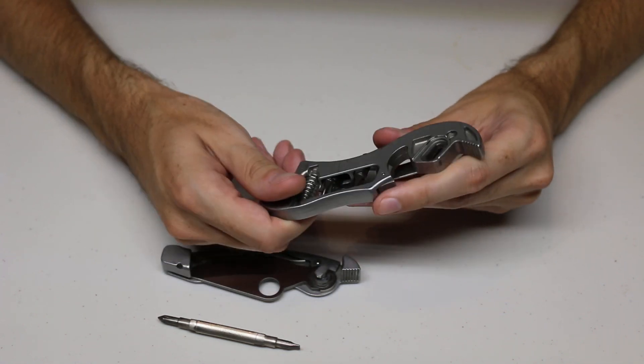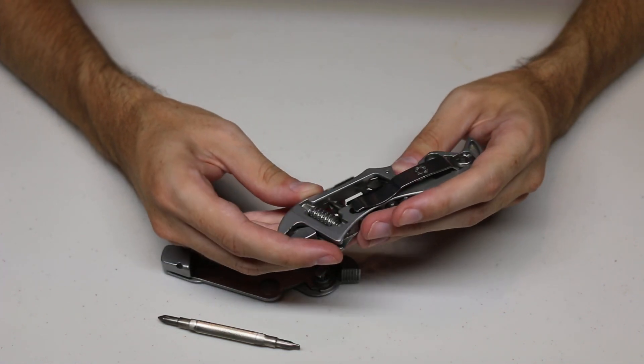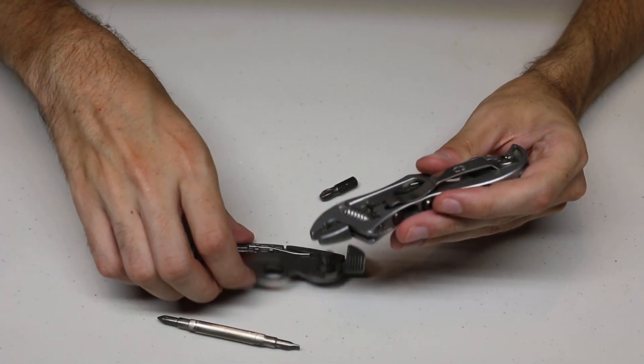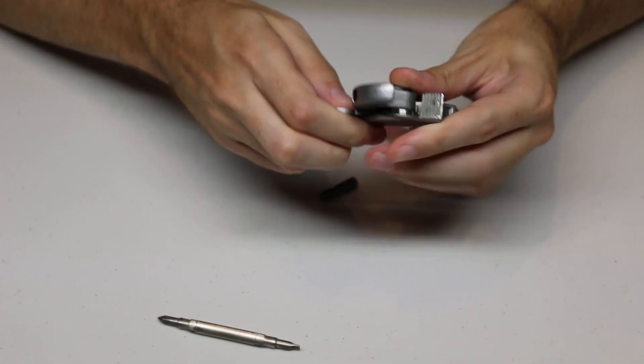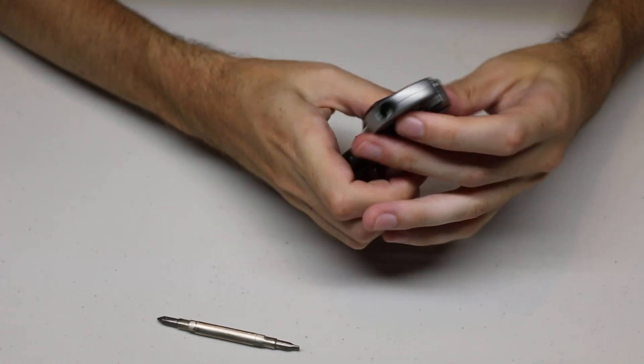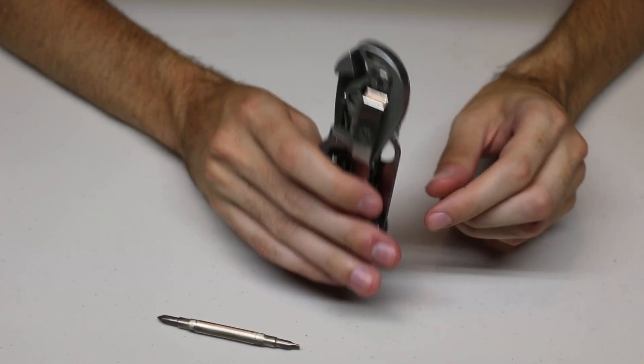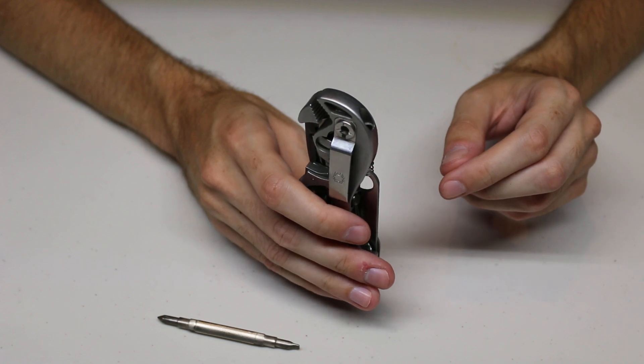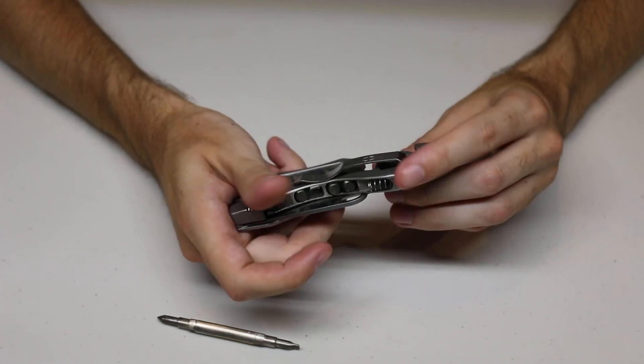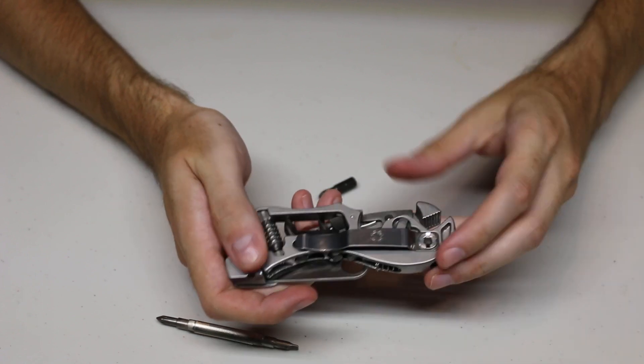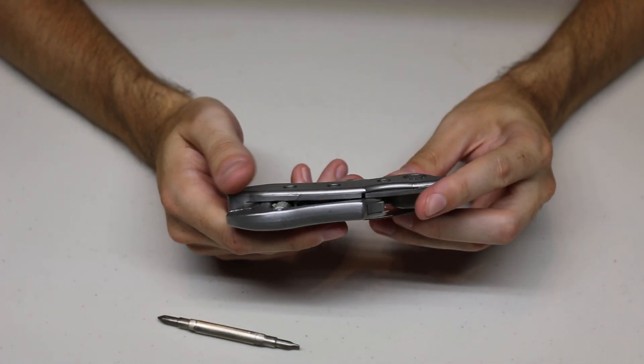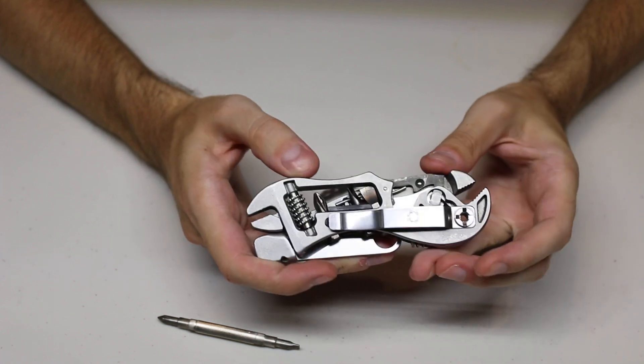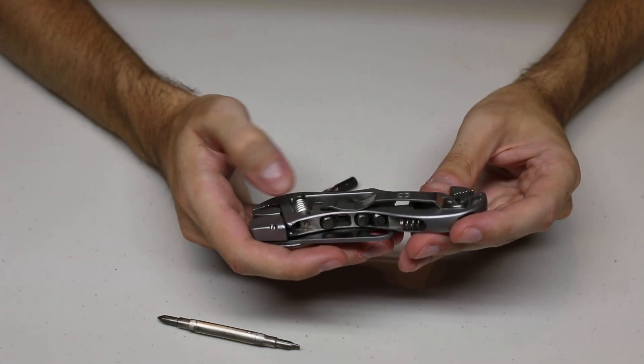Does come with a pocket clip right hand. Well, I guess that's right hand carry. Let's see if it's tip up or tip down. So it is I guess right hand tip down carry. Non-reversible pocket clip but that is super nice that it comes with a pocket clip. And there you go. That is this Spyderco spider wrench.